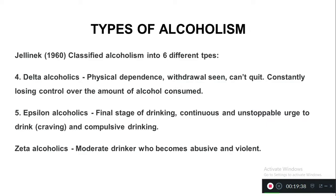Epsilon alcoholics have binge drinking behavior — constantly ingesting small amounts of alcohol and unable to stop thinking about taking it, constantly searching for alcohol. This is craving and compulsive drinking. The sixth type is zeta alcoholics — moderate drinkers who become abusive and violent. Once they drink, they start physical, sexual, and verbal abuse, becoming antisocial and exhibiting aggressive and violent behavior.